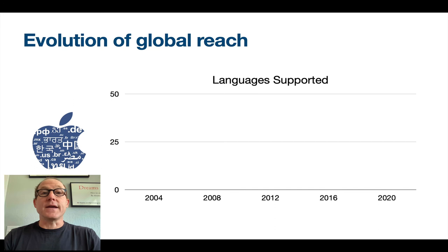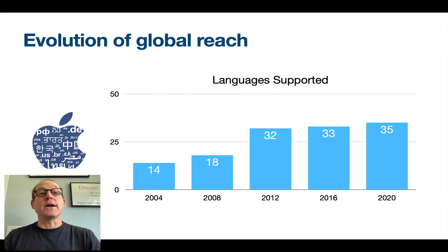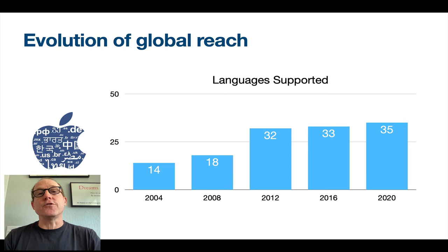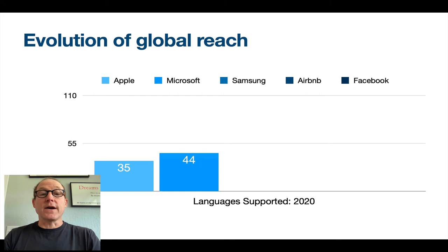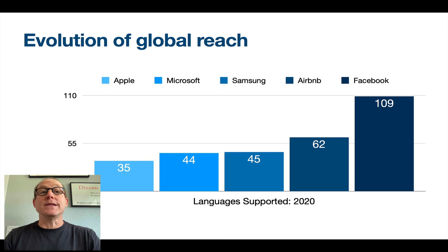Looking at the linguistic evolution: in 2004, Apple had 14 languages, and over the years that more than doubled to 35 where we stand today. That's slightly better than the average number of languages supported by the websites studied in the 2021 Report Card. But if we look at direct competitors and other consumer-oriented sites, Apple at 35 falls behind Microsoft and Samsung. And companies focused globally in a big way — like Airbnb at 62 languages or Facebook at 109 languages — show that Apple still has a lot of growing to do.